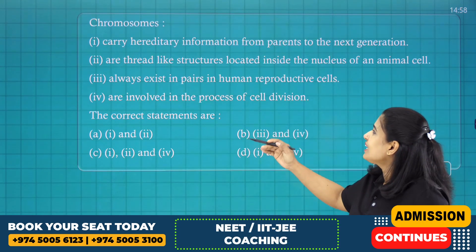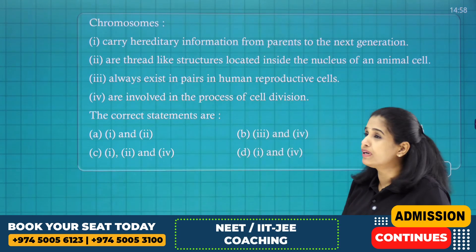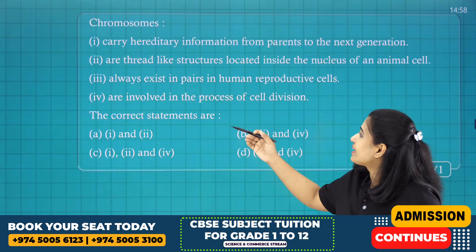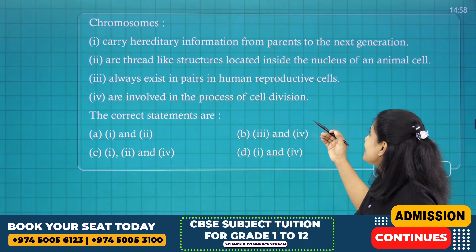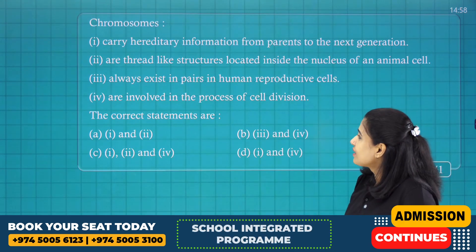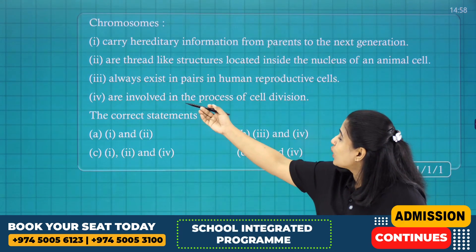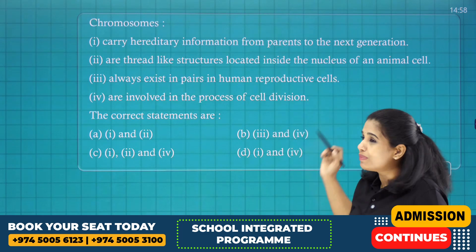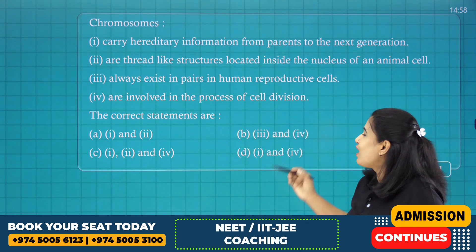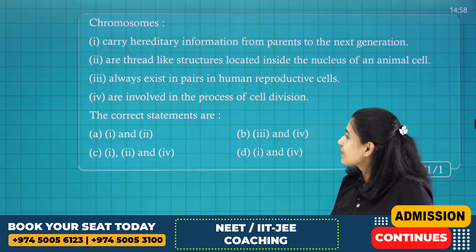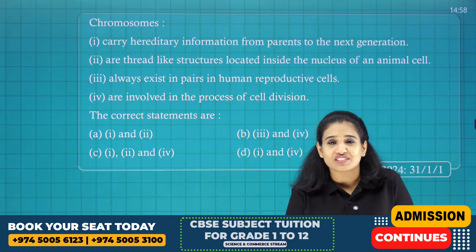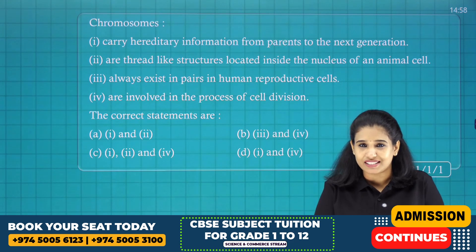The question states: Chromosomes carry hereditary information from parents to the next generation; are thread-like structures located inside the nucleus of an animal cell; always exist in pairs in human reproductive cells; and are involved in the process of cell division. Which are the correct statements?